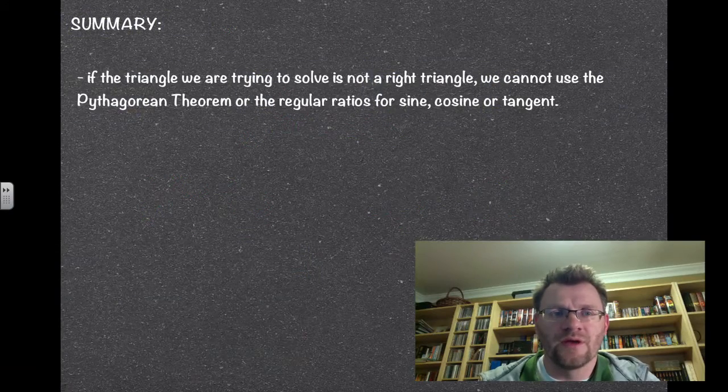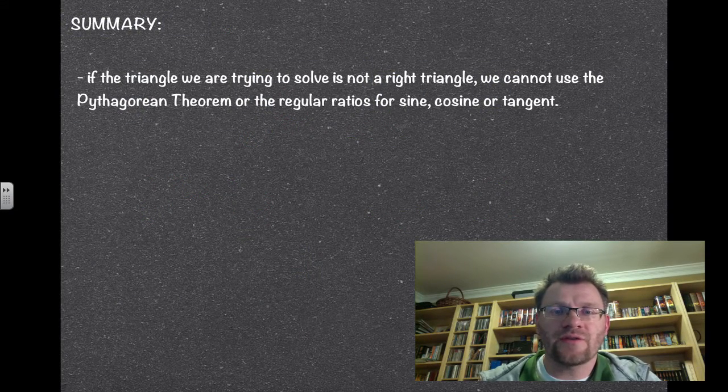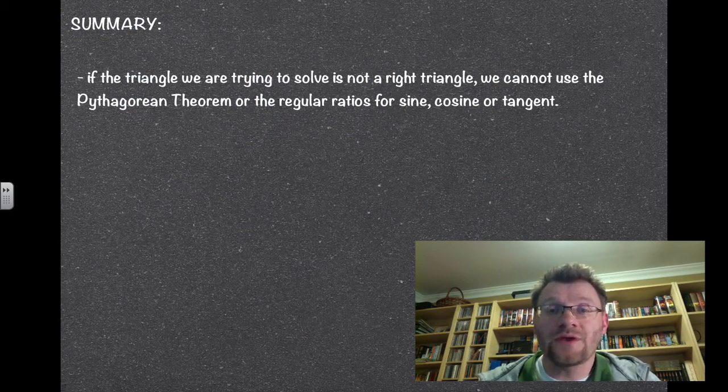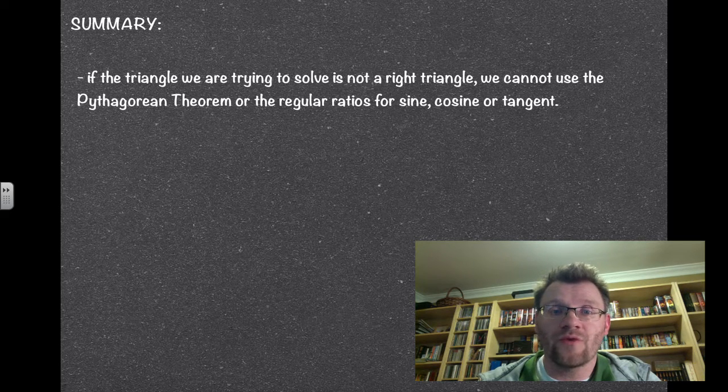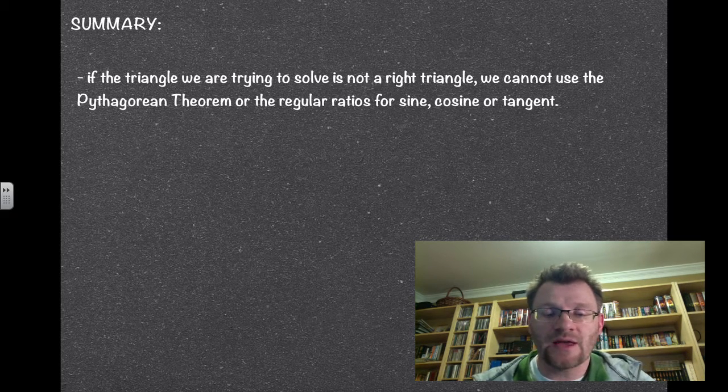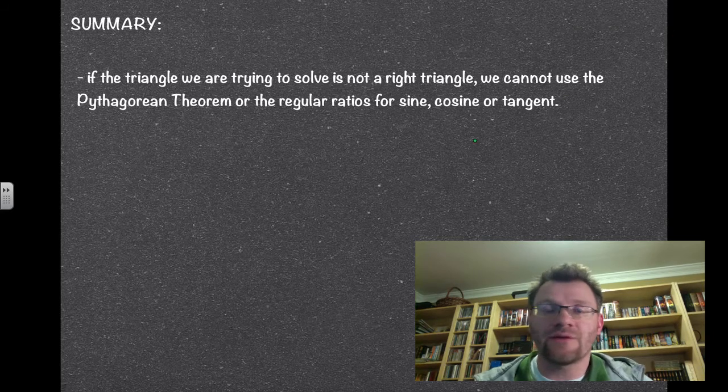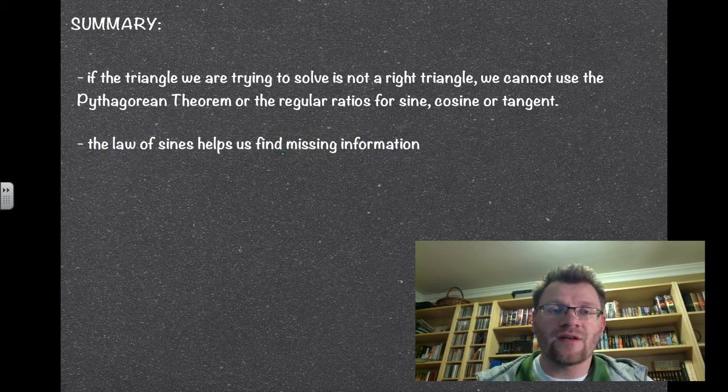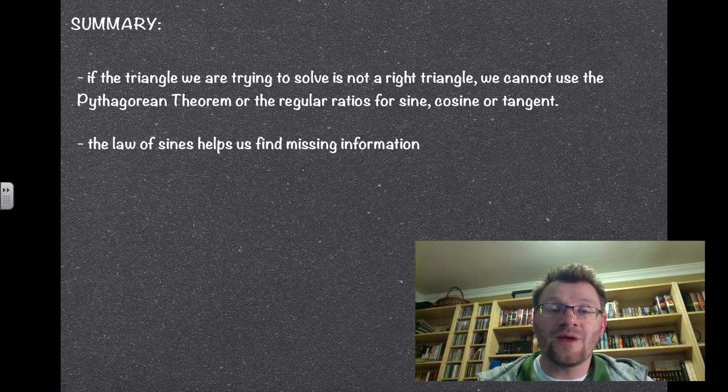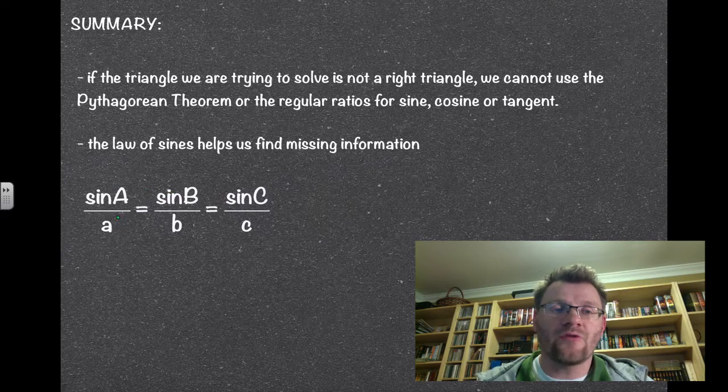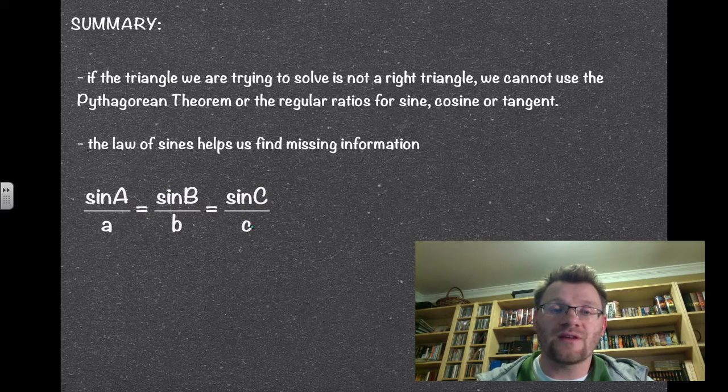So in summary, if the triangle we're trying to solve is not a right triangle, we cannot use the Pythagorean theorem or the regular ratios for sine, cosine, and tangent. The law of sines helps us find that missing information. And that is sine a over a equals sine b over b equals sine c over c.